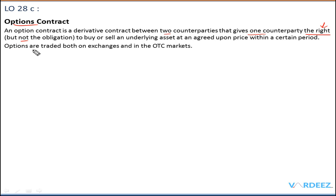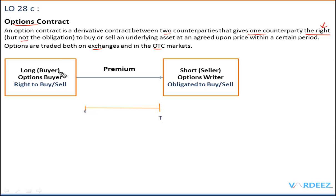Let's understand the options contract. We have the long — the person buying the options contract — and the short — the person selling it. In options terminology, the buyer is also referred to as the options buyer, and the seller is referred to as the options writer. On the exam, if you see that someone has 'written' an option, that means they are selling it. So options writer equals seller — make sure you remember this terminology.